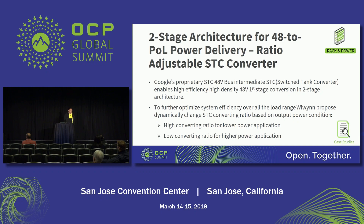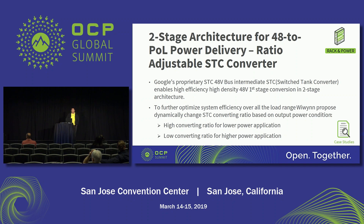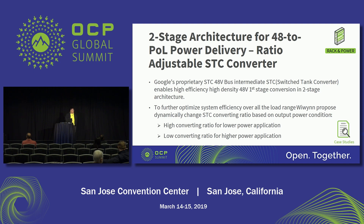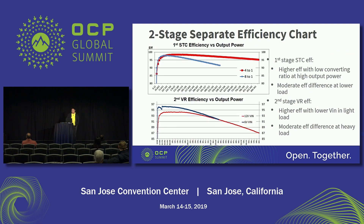The key idea is similar to VR multi-phase switching. We already know that when we do auto-phasing, we turn on fewer phases, and as load increases, we add the phase number to share the current. So this is about auto-phasing on the first stage 48-volt converting.